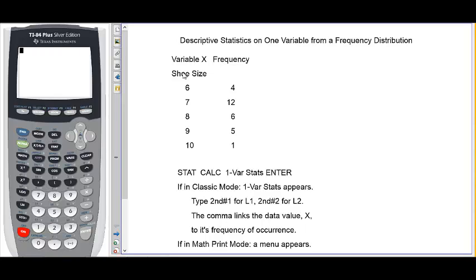The first thing you'll notice is that the data appears as if it's in two columns. But there really is just one variable, which is the shoe size of some students, ranging from 6 to 10.